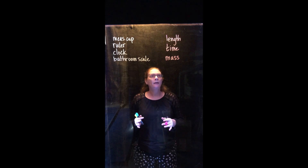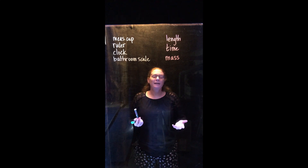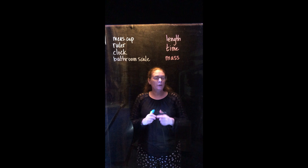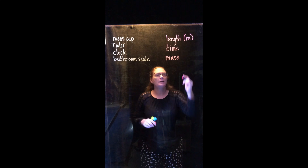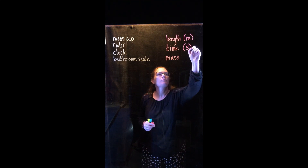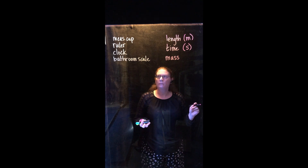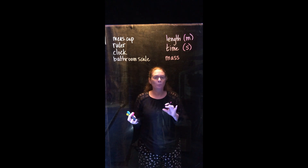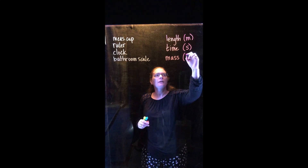Now I want to talk about the quantities that we actually measure at the base of everything we do. There are three things we actually make measurements of: length, time, and mass. Everything else we measure in the world comes down to these three things, which is pretty cool. We use the metric system — we're scientists. So our standard unit for length is the meter, for time the base unit is the second, and for mass it's measured in kilograms.